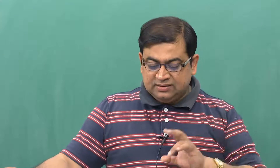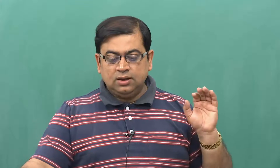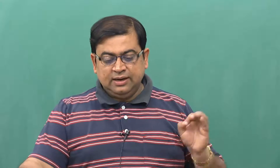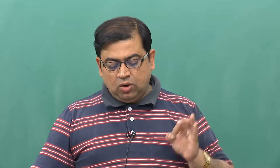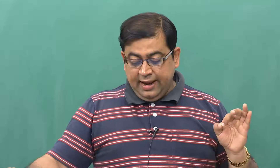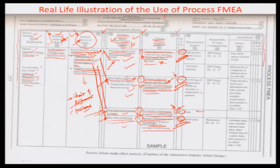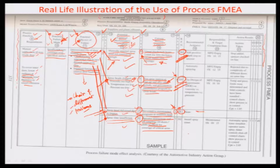The three causes to address are: first, the manually inserted spray head not inserted far enough, with the current process control of a visual check for film thickness each shift; second, spray heads clogged due to viscosity, temperature, or pressure issues, with spray pattern testing and preventive maintenance; and third, spray time insufficient with the highest RPN of 392, controlled by operator instructions and lot sampling of 10 doors per shift. Counter-measures are now identified for each.